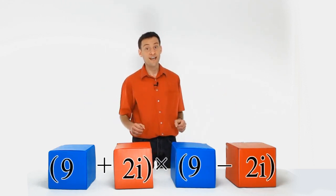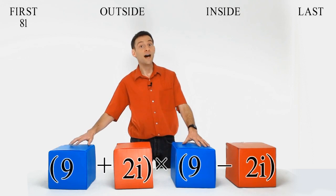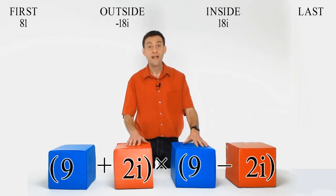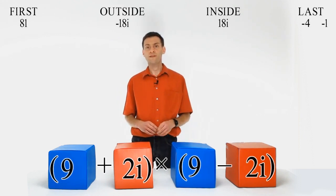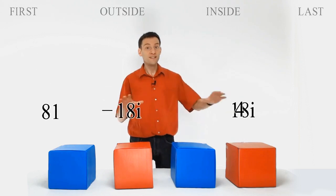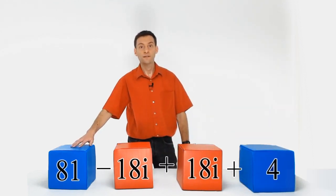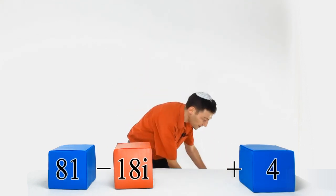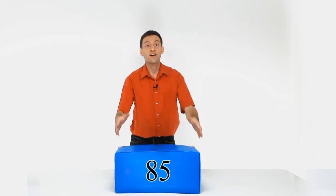The complex conjugate of 9 plus 2i is 9 minus 2i. Now if we multiply these two numbers together using FOIL, this is what we get. 9 times 9 equals 81. 9 times minus 2i equals minus 18i. 2i times 9 equals 18i. And 2i times minus 2i equals minus 4i squared. But i squared equals minus 1. So minus 4i squared equals minus 4 times minus 1, which simply equals 4. So grouping these terms together gives us 81 minus 18i plus 18i plus 4. The minus 18i and 18i cancel out, leaving us with no i's. So we're simply left with 81 plus 4 giving us 85, a totally real result.